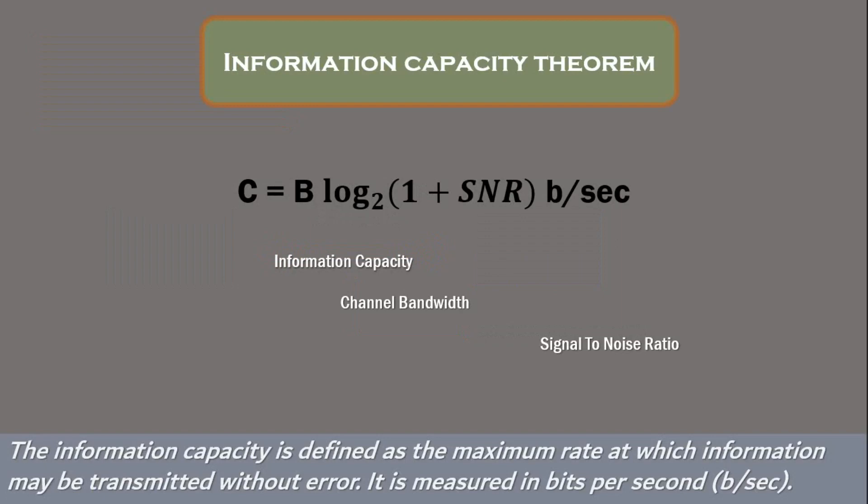There is a theorem which may define how much information we could transmit without any error or the capacity of information. That is called information capacity theorem.